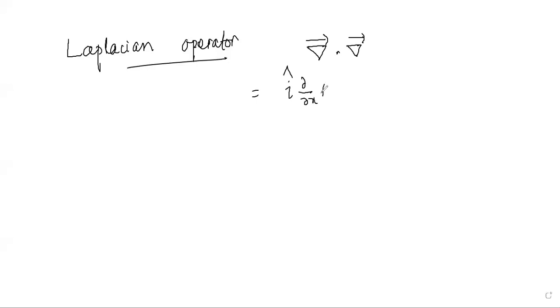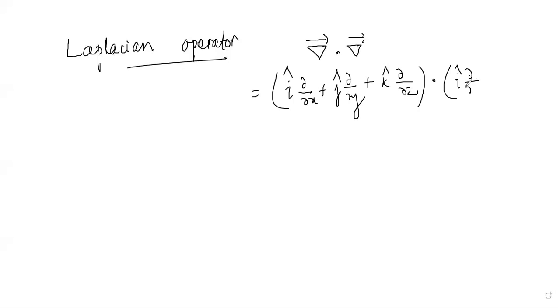Today we are going to discuss the Laplacian operator. The Laplacian operator is nothing but the dot product of two del operators — del·del. Substituting the value for del: (î ∂/∂x + ĵ ∂/∂y + k̂ ∂/∂z) dot (î ∂/∂x + ĵ ∂/∂y + k̂ ∂/∂z).